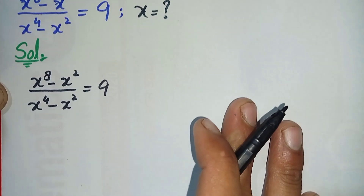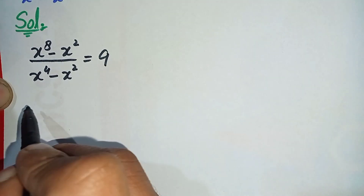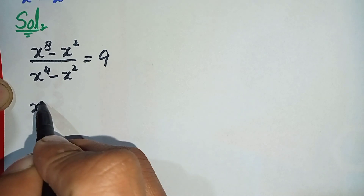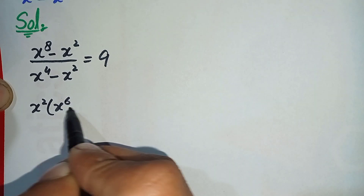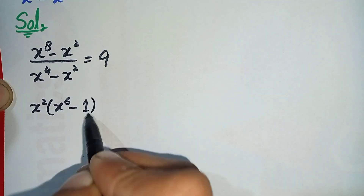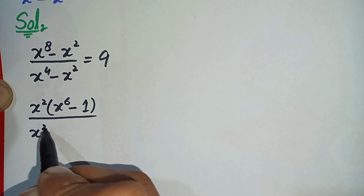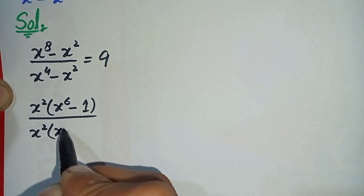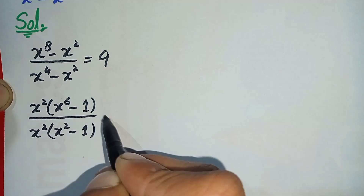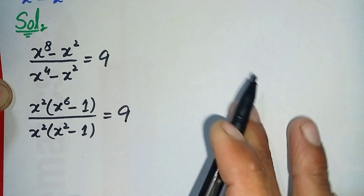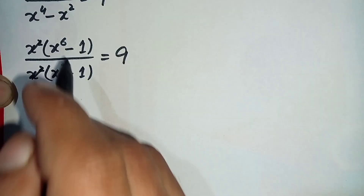First of all, I will take x squared common from both the numerator and the denominator. Taking x raised to power 2 common from the numerator gives x raised to power 6 minus 1. Taking x raised to power 2 common from the denominator gives x raised to power 2 minus 1. Now we cancel x squared with x squared.